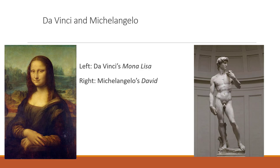Michelangelo was also from Florence—a painter, sculptor, and architect. His sculpture of David was made from 1501 to 1504, standing 17 feet tall and placed in a public square in Florence near the civic government before being moved later. The sculpture shows Michelangelo's effort to realistically depict the human body. He is also very famous for painting the ceiling of the Sistine Chapel.